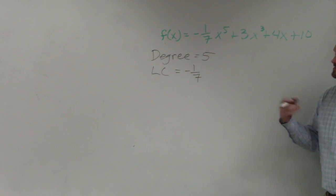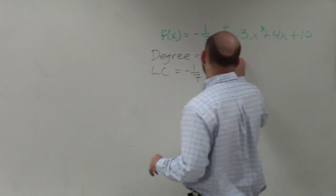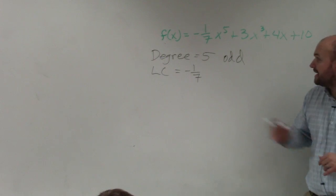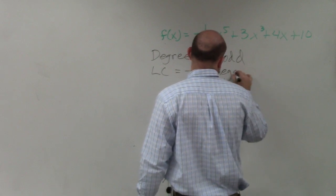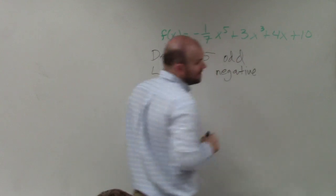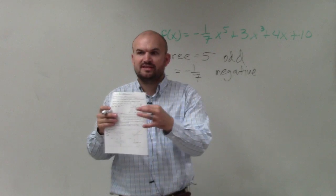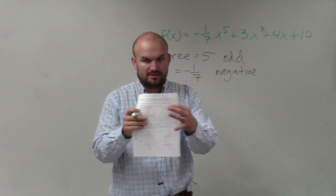So now, since my degree is 5, I know that is odd. Since my leading coefficient is negative 1/7, it's negative. Now, if you do not already have this memorized, you can basically look at this and see what the sketch of the graph would kind of look like.